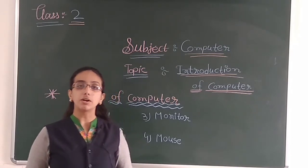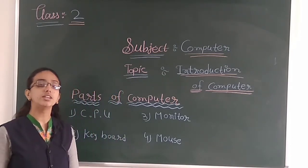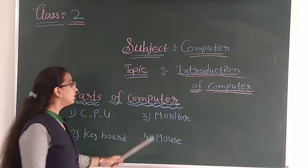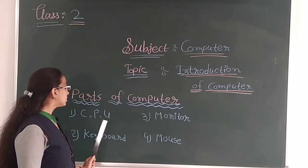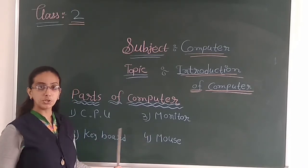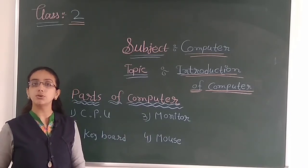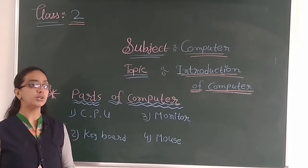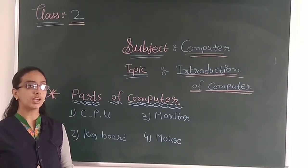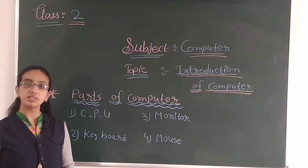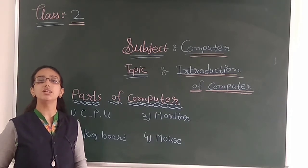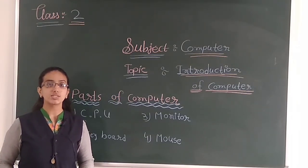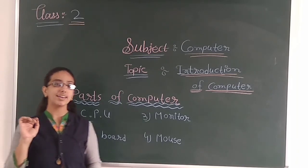Okay students, in this session we covered the computer parts: monitor, mouse and CPU. The full form of CPU is Central Processing Unit. Please revise this video once again, and we will discuss further in our live lecture. Until then, bye.